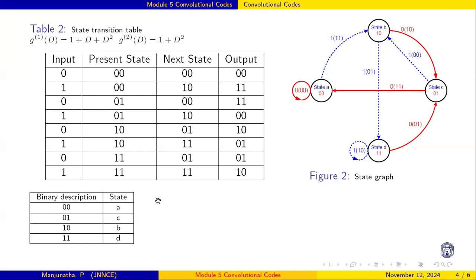For state C (representing 01): giving input 0 transitions to state A (00) with output 11. When input 1 is given, it goes to state B with output 01. Similarly, we can draw all state transitions to complete the state diagram.